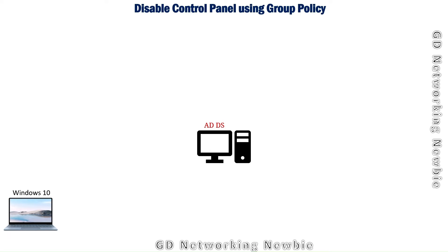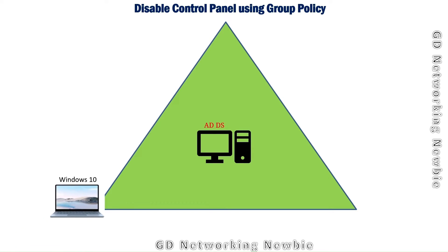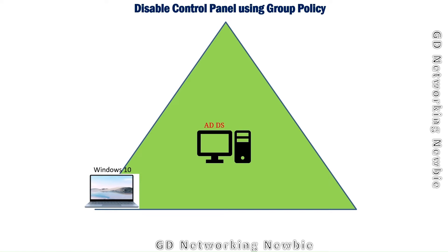In this video we are going to see how we can disable Control Panel using Group Policy in Windows Server 2022. I already have Windows Server 2022 installed in VMware, with Active Directory Domain Services installed, giving me a domain controller. Windows 10 is part of that domain, and I want that any user logged into this domain should not be able to see Control Panel.